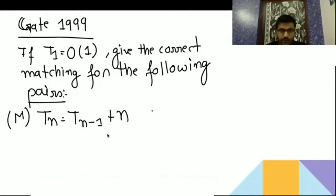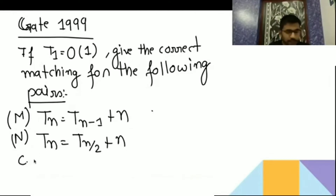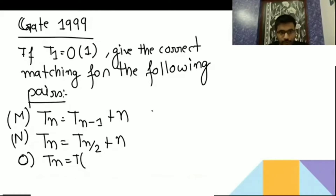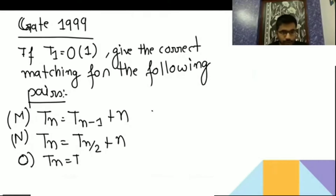This is your option M. Option N is T(n) = T(n/2) + n. Option O is T(n) = T(n/2) + n log n.